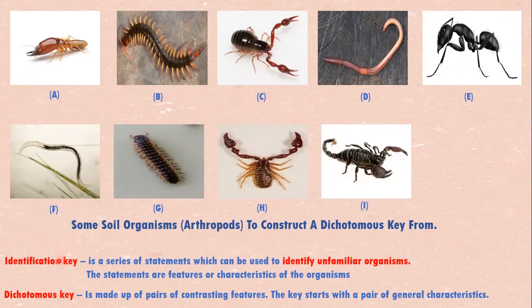Now, what is an identification key to start with? They are just series of statements which can be used to identify unfamiliar organisms. And the statements are features or characteristics.